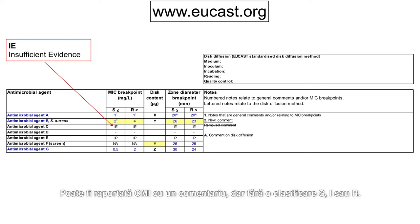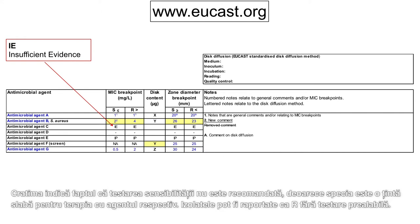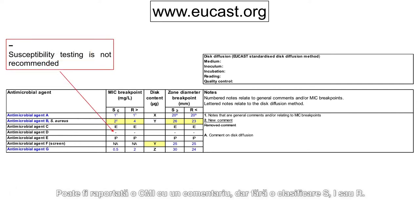IE indicates that there is insufficient evidence that the species is a good target for therapy with the agent. An MIC with a comment but without an accompanying S, I, or R categorization may be reported. A dash indicates that susceptibility testing is not recommended as the species is a poor target for therapy with the agent.